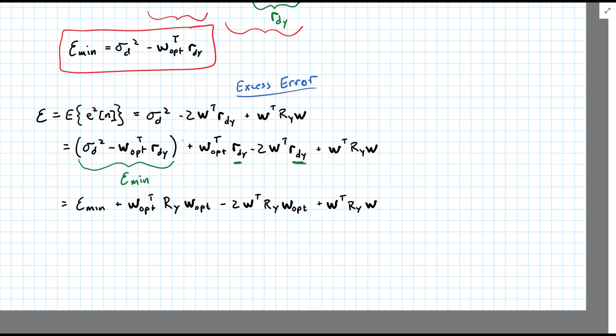Okay, so we notice here that we have two quadratic terms with W. One is with W_opt, W_opt transpose times R_y, W_opt. And the other is with W.